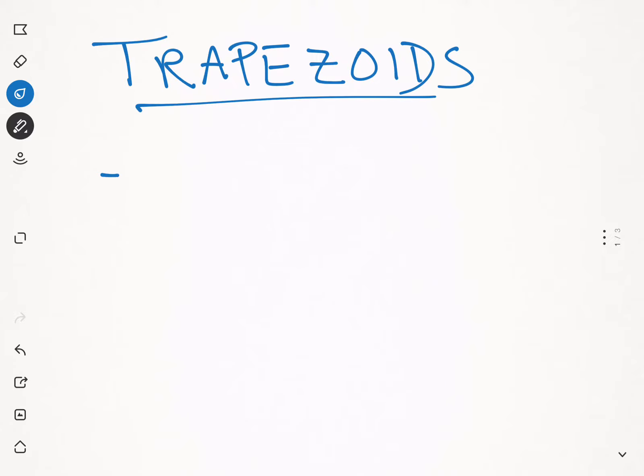Okay, this is my daughter Libby. She's going to help us learn about trapezoids. So a trapezoid is a quadrilateral. Do you know what that means, Libby? It has four sides. Very good.